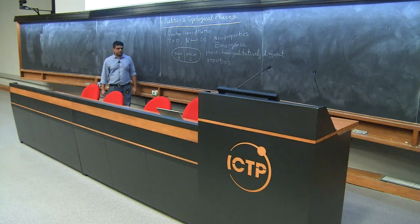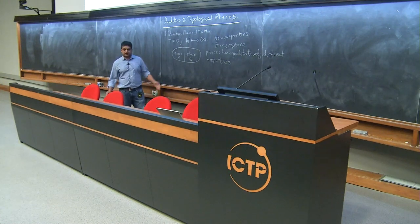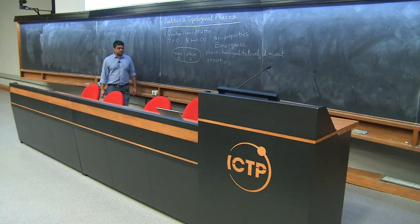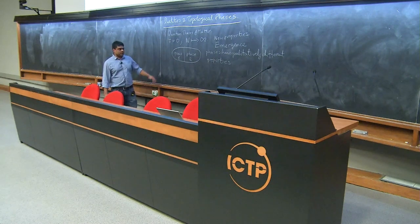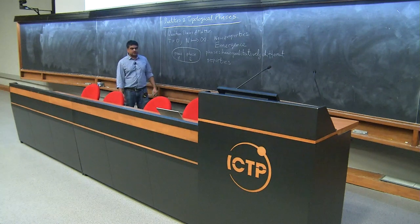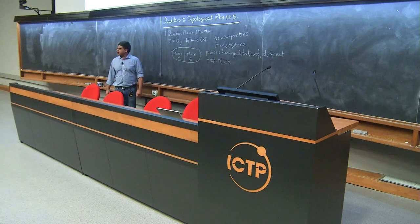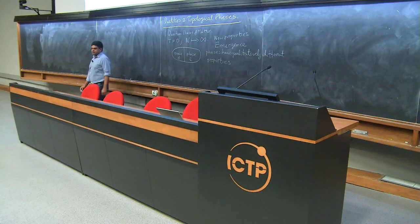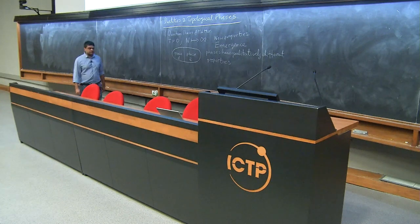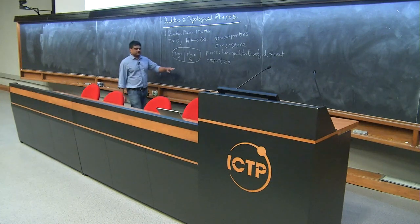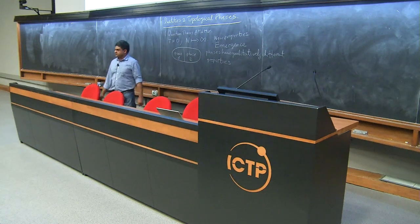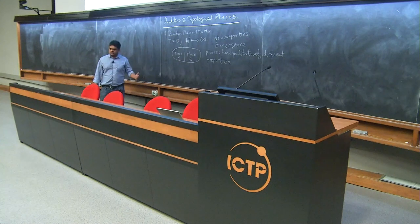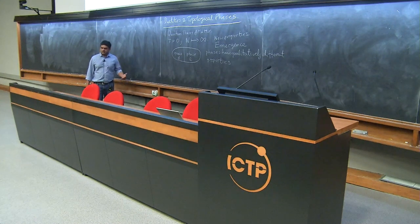If you think about a magnet, the spins align in a certain direction — they break the rotation symmetry, and that happens at a certain temperature, a Curie temperature. That's an example of distinguishing phases in terms of symmetry. For a long time, it was thought that was the only way — that exhausts the set of qualitatively different properties. If you had a symmetry distinction, those were two different phases; if you had no symmetry distinction, those were actually the same phase.